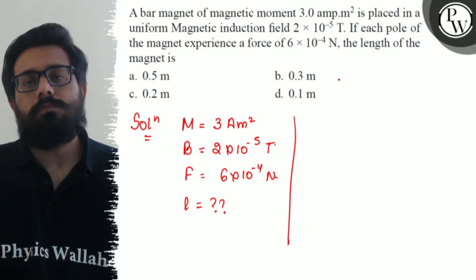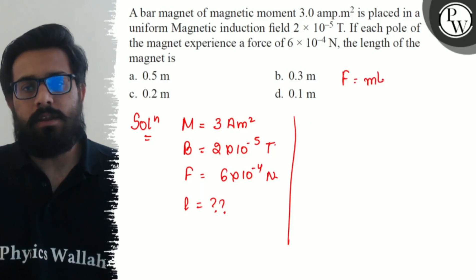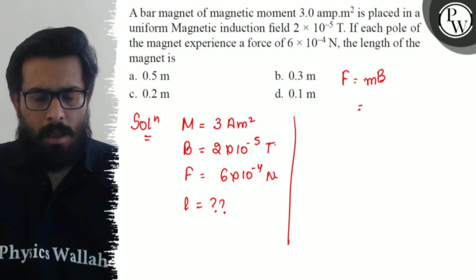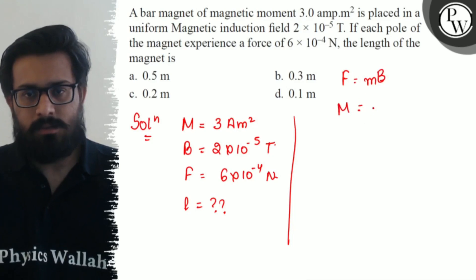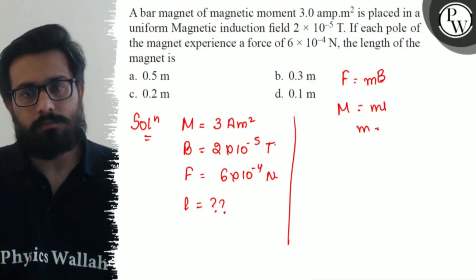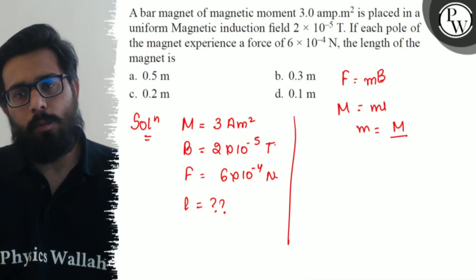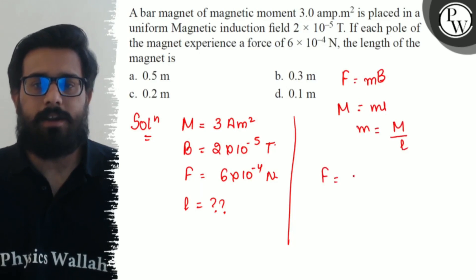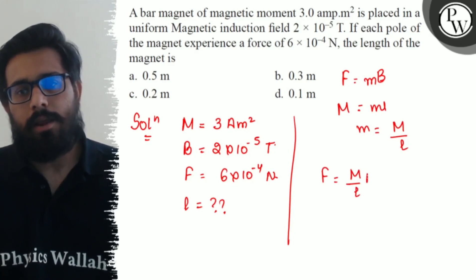Now, we know that relation that F equals pole strength times magnetic field. Pole strength can be written as capital M (magnetic moment) over length. So the value of force can be written as M/L times B.